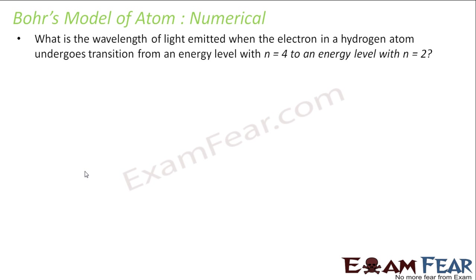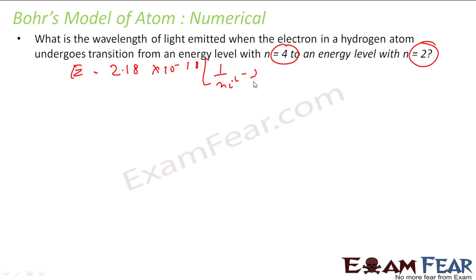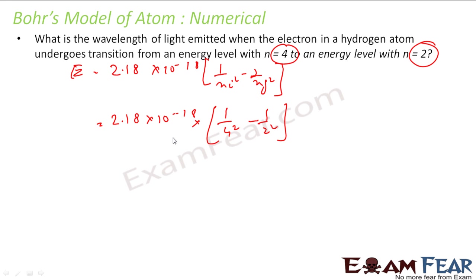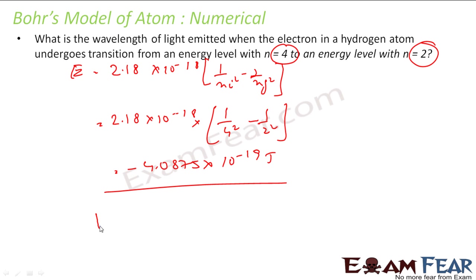Now we define the wavelength of light emitted when the electron of the hydrogen atom moves from n equal to 4 to n equal to 2 — a similar version. E is equal to 2.18 into 10 to the power minus 18 into 1 by n-initial squared minus 1 by n-final squared. n-initial was 4, n-final was 2, so 2.18 into 10 to the power minus 18 times 1 over 4 squared minus 1 over 2 squared. If you solve this you get minus 4.0875 into 10 to the power minus 19. This is negative meaning it has emitted. Here also you can use the same formula: E is equal to hc by lambda, so lambda equals hc by E. I have the value of E, h, and c.